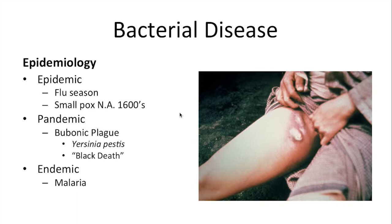A really good example of an epidemic is the smallpox epidemic in North America in the 1600s. Europeans began to come over, start colonies, and with them they brought their germs. The Native Americans that lived on this continent had never been exposed to those particular germs before. And so when the Europeans brought them over, entire groups of Native Americans were completely wiped out by smallpox.